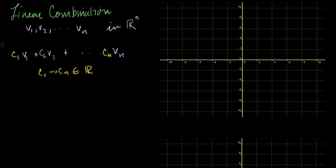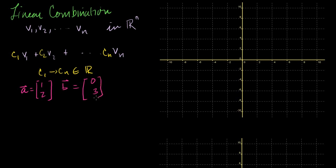Let me show you a concrete example of linear combinations. Let me define the vector a to be equal to [1, 2], and the vector b to be equal to [0, 3]. What is a linear combination of a and b?